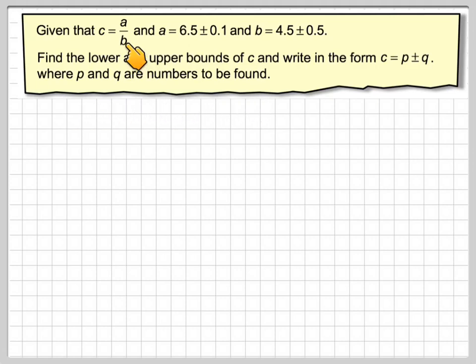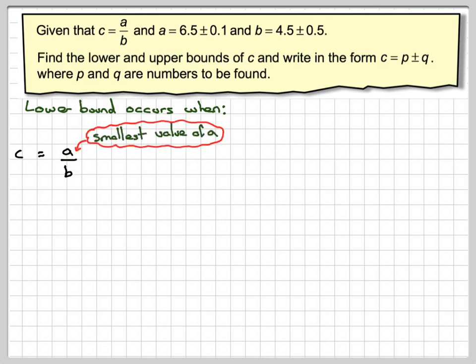Let's find the upper and lower bound of doing this division first. The lower bound occurs when, now you have to think because you're doing division here, you've got c is a divided by b, so you want a to be the smallest value possible and b to be the largest value. That will give you the smallest value, the lower bound of c.